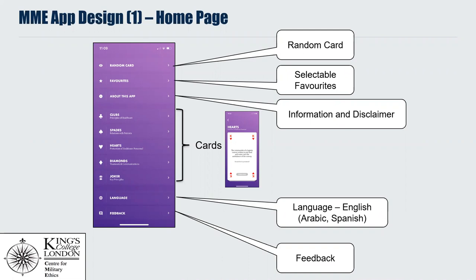The homepage also shows the four suits: clubs — principles of healthcare; spades — relations with patients; hearts — protection of healthcare personnel; and diamonds — teamwork and communication. There are two joker pages covering some background principles, a tab to translate into other languages, and finally a feedback tab.